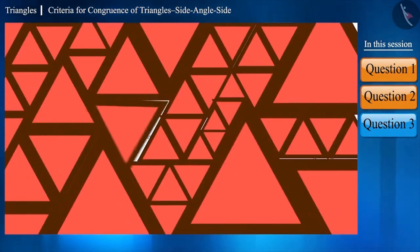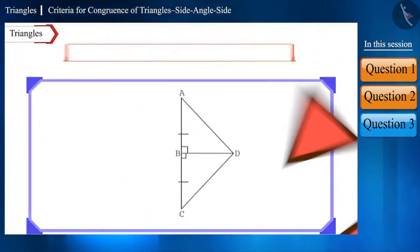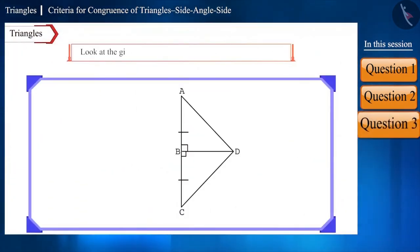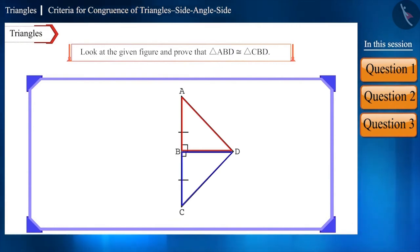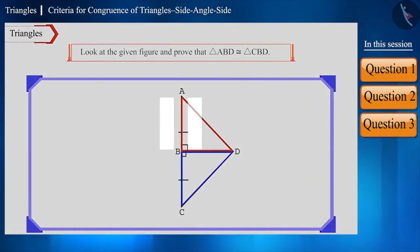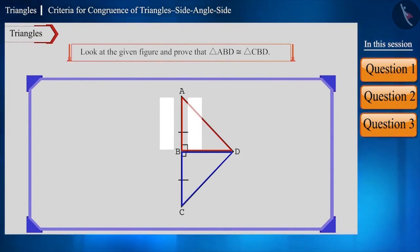Let's take one more question. Look at the given figure and prove that triangle ABD and triangle CBD are congruent. Pause the video and try to solve this question yourself, and then see the solution.